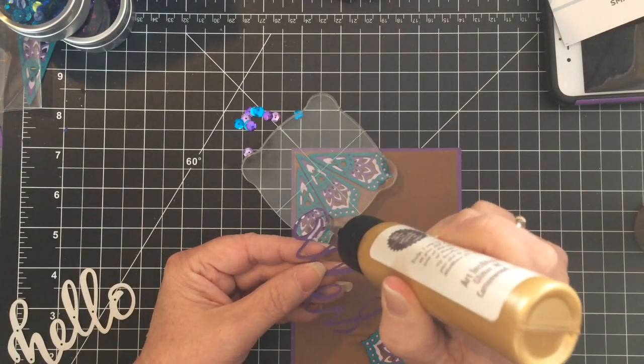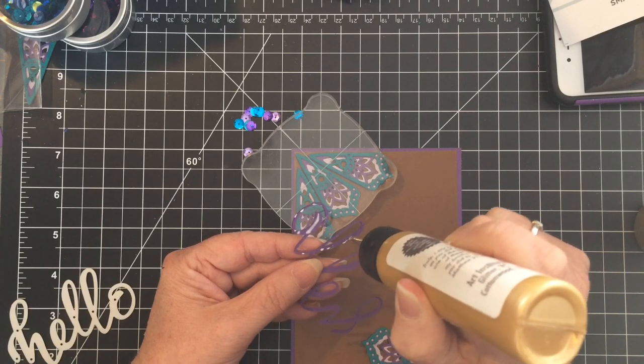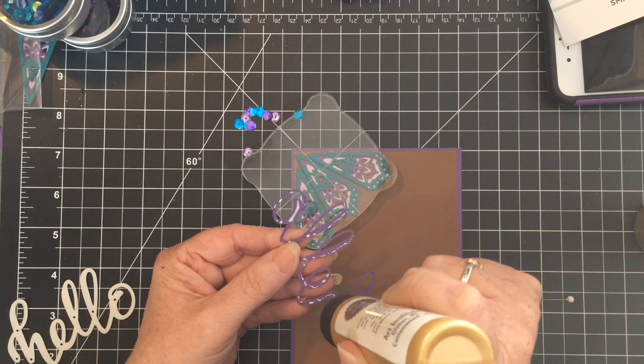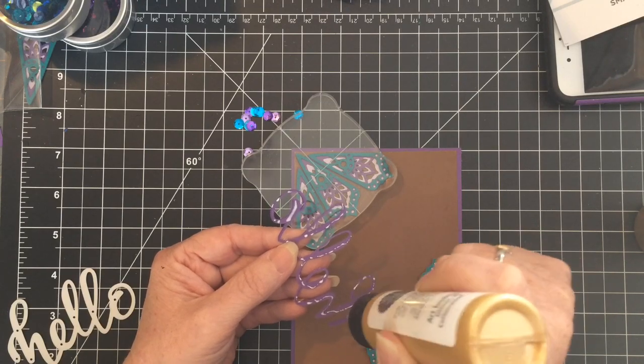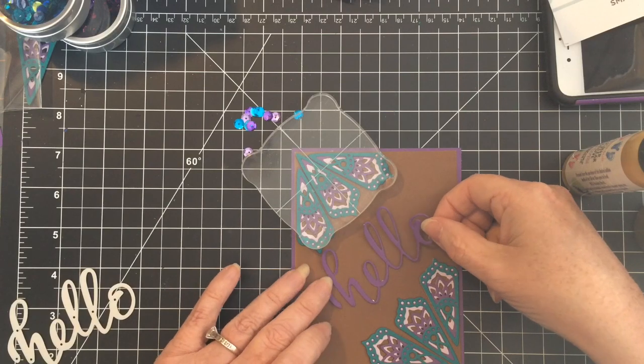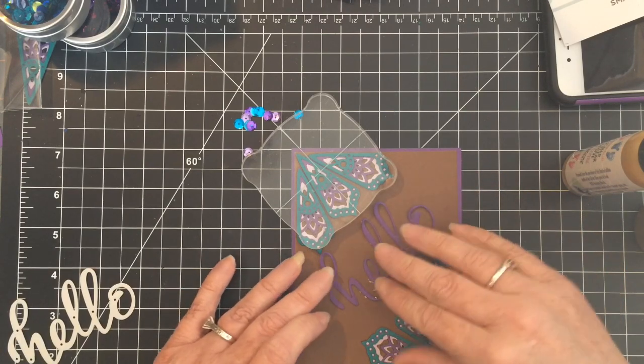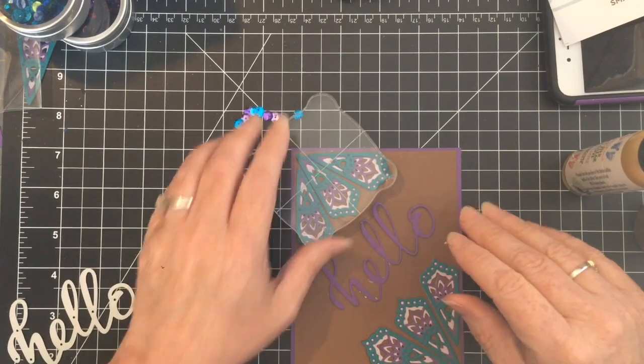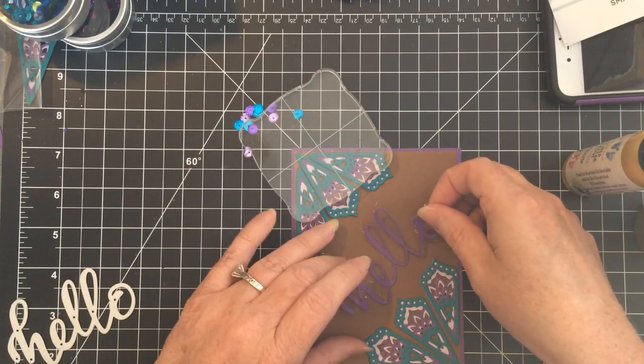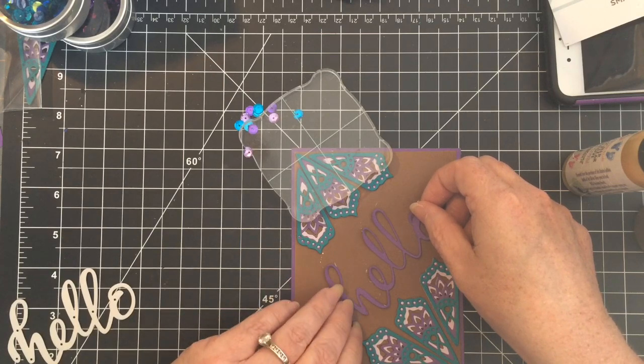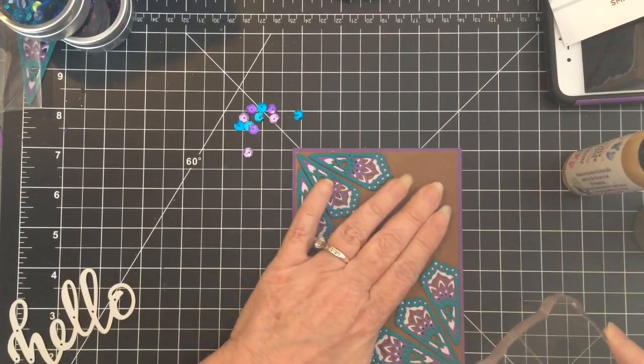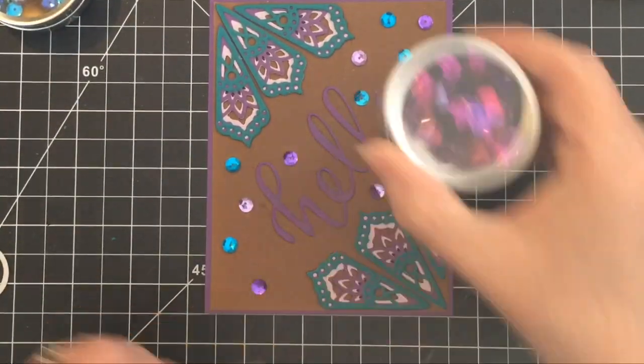Again, I recommend getting that fine metal tip that goes on it because I just think it makes it a lot easier, especially with this very detailed little work. And you'll see when I put my hello down there, I didn't quite get it centered. And this is another thing that I love about the art glitter glue. I was able to kind of pick it up and put it back down. And don't worry, guys, because you're not going to see any of that glue because it dries clear. And even if a little bit of it would have shown, you'll see I add some sequins here in a little bit. And you could cover it up with that.